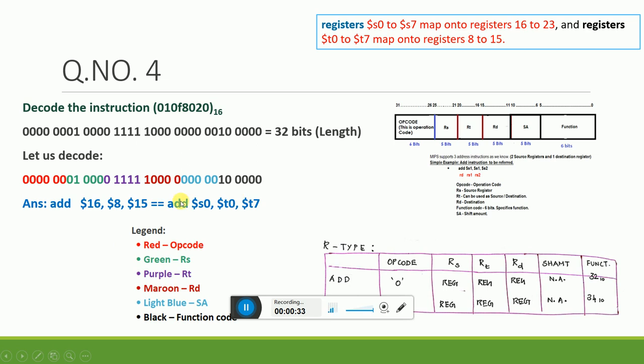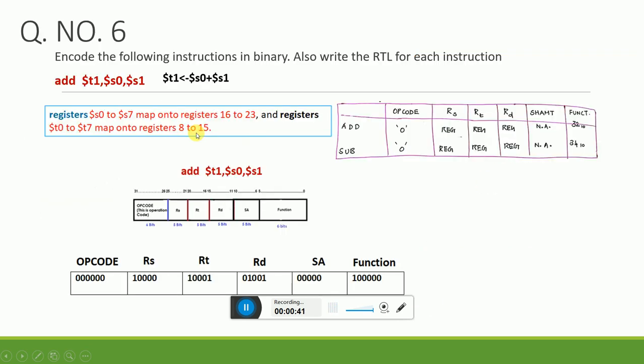This is a very simple exercise. The only thing you need to remember is s0 to s7 are always mapped to registers 16 to 23, and t0 to t7 is always mapped to registers 8 to 15. You should not forget this.